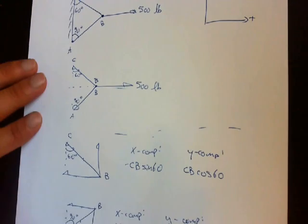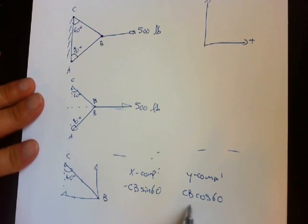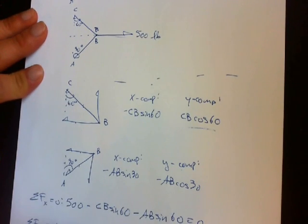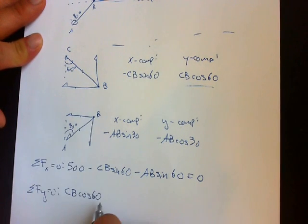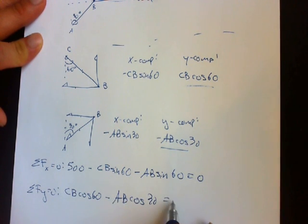For force BC, you've got CB cosine 60. And for BA, you've got minus AB cosine 30 equals zero.